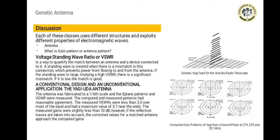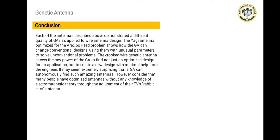However, if the reflection losses are taken into account, the corrected values for the Yagi antenna approach the computed gain. You can see the computed gain pattern of Yagi over a ground plane at 119, 235, and 251 MHz.